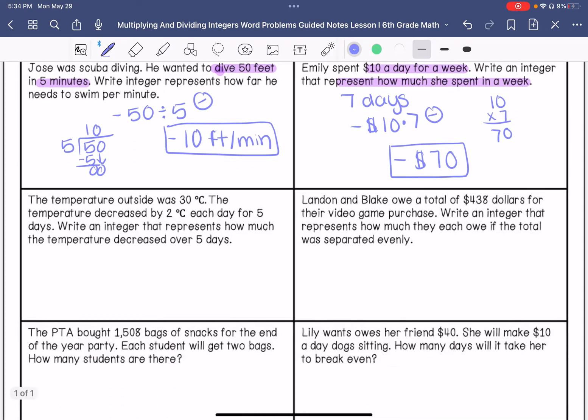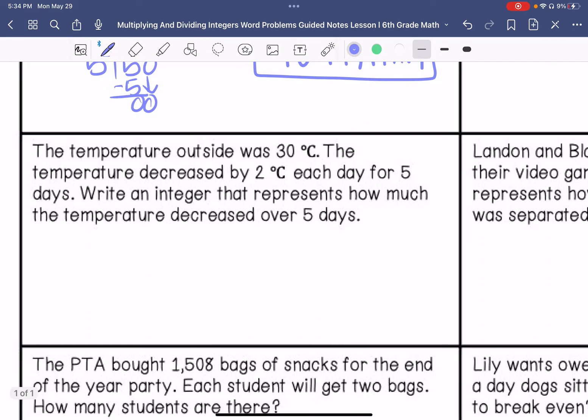The temperature outside was 30 degrees. The temperature decreased by 2 degrees Celsius each day for 5 days. Write an integer that represents how much the temperature decreased over 5 days. So that 30 degrees Celsius is extra information. So we have that it decreased negative 2 degrees Celsius for 5 days. Our answer is going to be negative. 2 times 5 is 10. So our answer is negative 10 degrees Celsius.